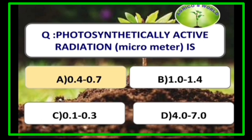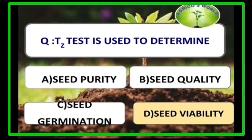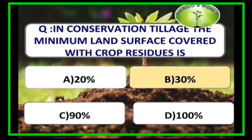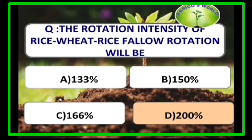Photosynthetically active radiation is 0.4 to 0.7 micrometers. TZ test is used to determine seed viability. In conservation tillage, the minimum land surface covered with crop residues is 30%, whereas in no-tillage, the land surface covered with crop residues is 80 to 90%.